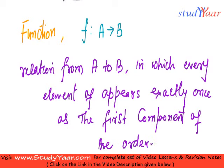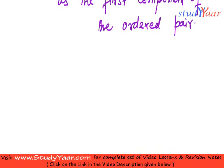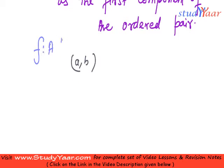We are talking about an ordered pair, which basically means we are talking about the elements of this relation. If I have (a, b) then this is an ordered pair and a is the first component of the ordered pair. Since our function f is from A to B, then a belongs to capital A and b belongs to capital B.